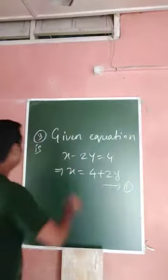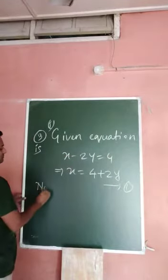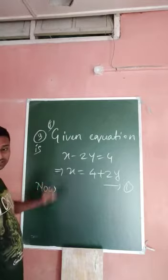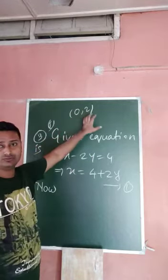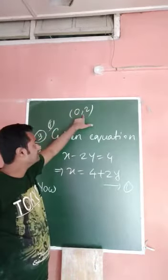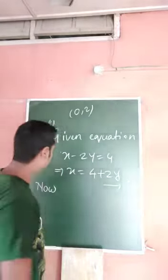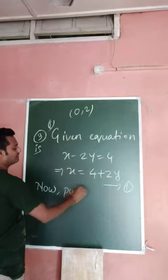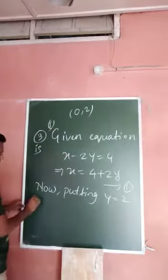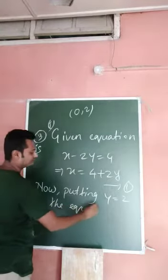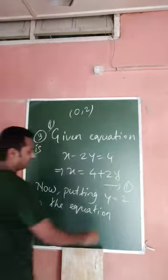Now the first part: the given solution to check is (0, 2). That means the value of x is 0 and the value of y is 2. We need to put one of these values into the given equation to check whether both values are satisfied. So now putting y equal to 2 in equation 1, we get: